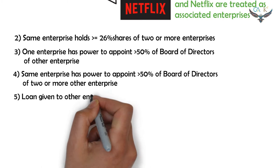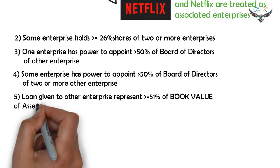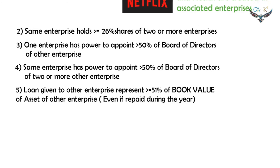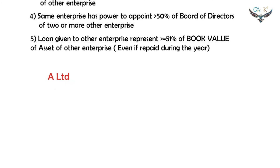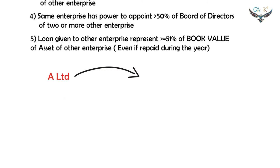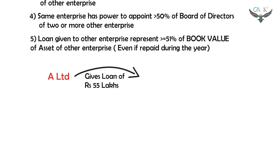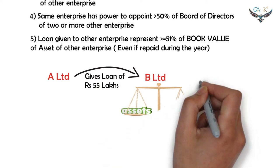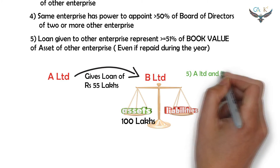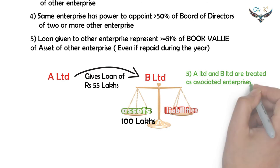The next criterion is: loan given to another enterprise represents 51% or more of the book value of assets of that other enterprise. Repayment of the loan during the year does not make any changes. For example, A Limited gives a loan of Rs. 50 lakhs to B Limited, which represents more than 51% of the total asset value of B Limited — so both A Limited and B Limited are treated as associated enterprises.